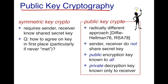The biggest question that arises is how to agree on a key in the first place, particularly if the sender and receiver have never met. So in 1976, Diffie and Hellman proposed a radically different approach, called public key cryptography.